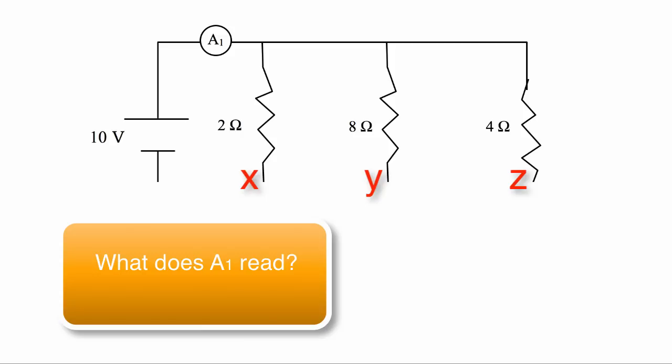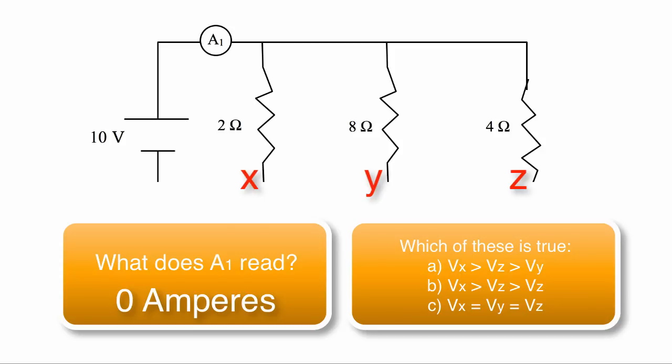Because there's not a complete circuit, that must read 0. But here's the more interesting question. What is the voltage at X, Y, and Z? And here's three choices. Which is the correct order of voltages?